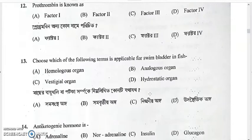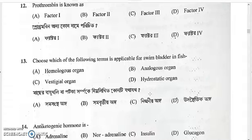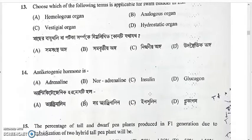Question: which term is applicable for the swim bladder in fish? The swim bladder is a hydrostatic organ. It is not an analogous, homologous, or vestigial organ — it is a hydrostatic organ.